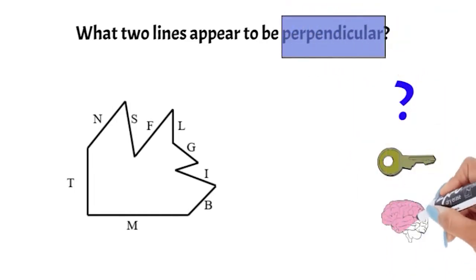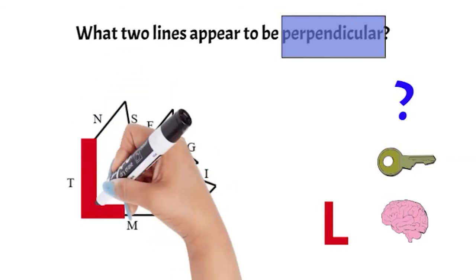I know perpendicular means the lines must cross to form a right angle or a corner. Now I will look at the shape and try to find two line segments that create a perfect corner. When I look, I see that line segment M and T appear to be making a right angle.